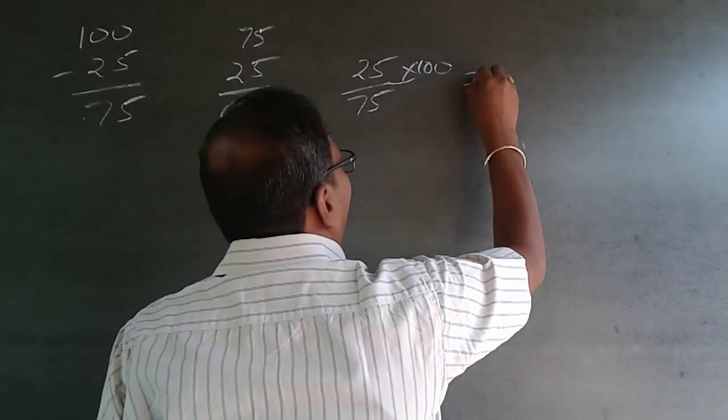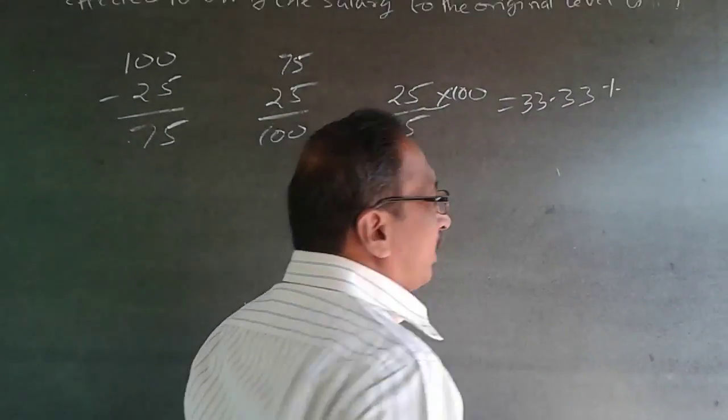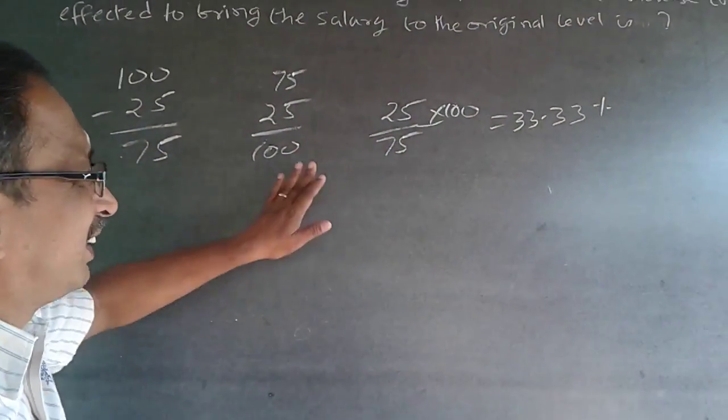The percentage will be 25 divided by 75 times 100, which equals 33.33 percent. The answer is 33.33 percent. This is the easier way of doing it.